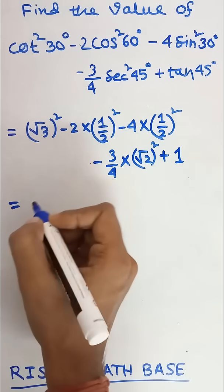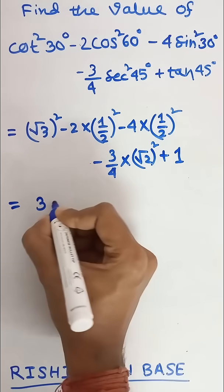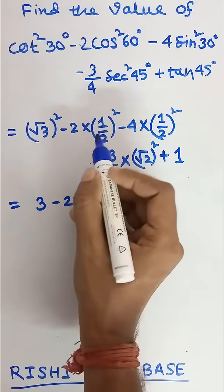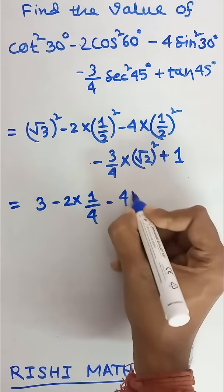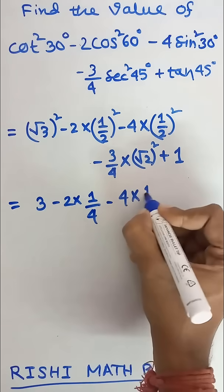The value of root 3 whole square is 3 minus 2 into this is 1 by 4 minus 4 into 1 by 4.